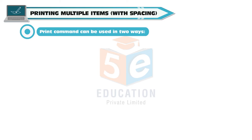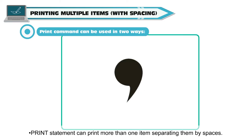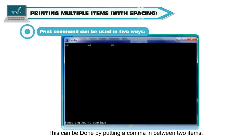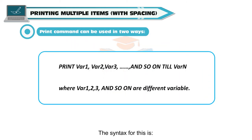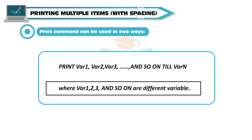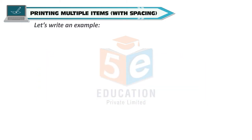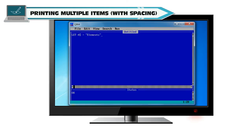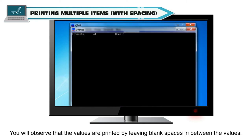PRINT can be used in two ways. PRINT can print more than one item separated by spaces, done by putting a comma between items. The syntax is: PRINT variable1, variable2, variable3, ... variableN. For example: LET a$ = "elements", LET b$ = "of", LET c$ = "QBasic". PRINT a$, b$, c$. You will observe that the values are printed with blank spaces left between them.